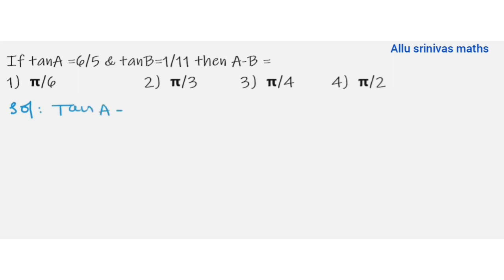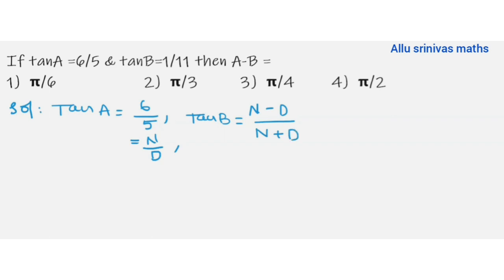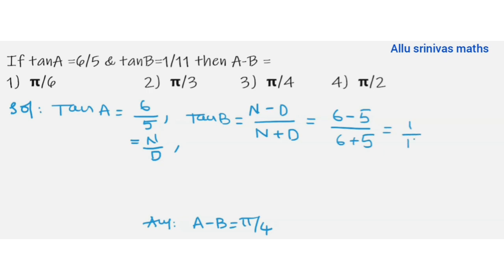Now a different condition: tan A equal to 6 by 5 and tan B equal to some value. Here, the condition is opposite — numerator minus denominator by numerator plus denominator. For A minus B = 45°: numerator minus denominator by numerator plus denominator = 6 minus 5 by 6 plus 5 = 1 by 11. Tan A and tan B values satisfied, so A minus B equal to 45 degrees.